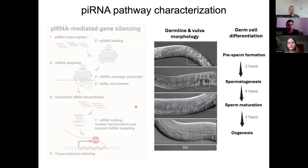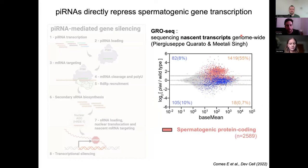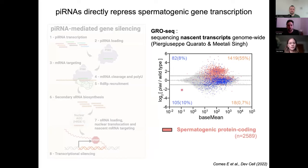For this, we characterized the piRNA pathway functions along germline development, which involves very fast and dynamic changes in germline and vulva morphology, germ cell differentiation, and overall gene expression programs. We started by sequencing nascent transcripts genome-wide, and during spermatogenesis, we observed a strong transcriptional upregulation of thousands of spermatogenic protein-coding genes in piRNA pathway mutants compared to wild-type. This suggested that the piRNA pathway targets and represses the transcription of spermatogenic genes.